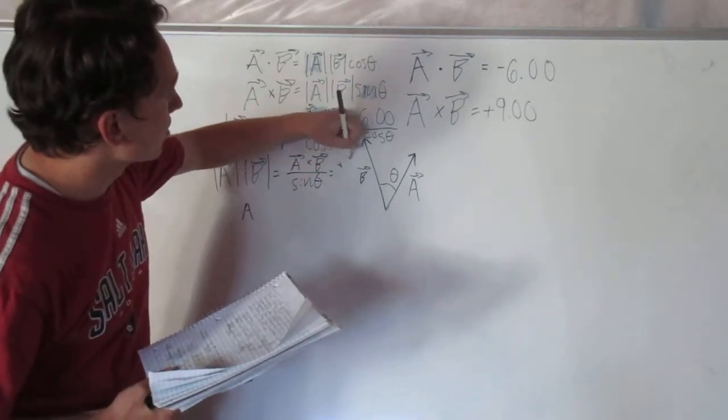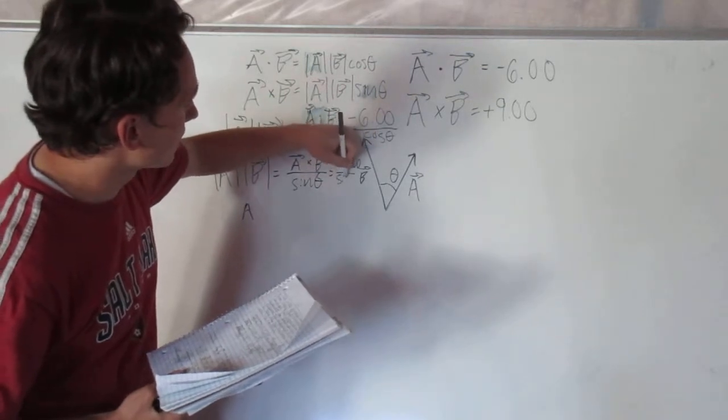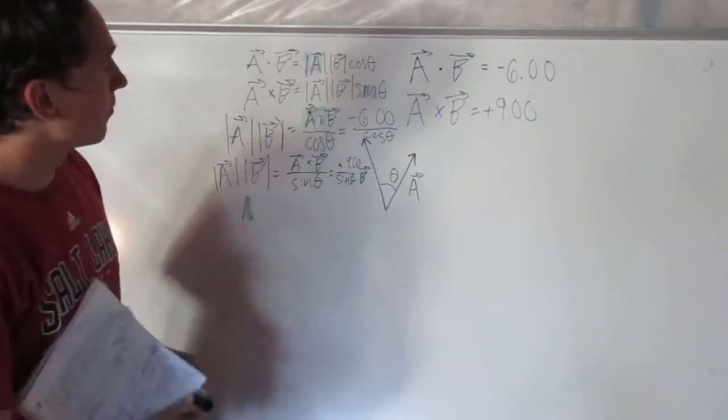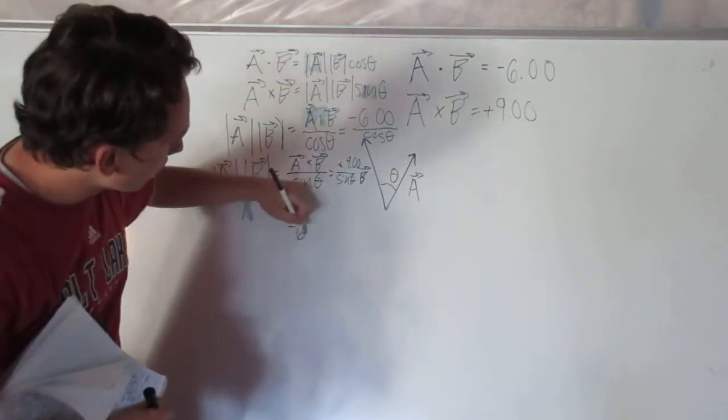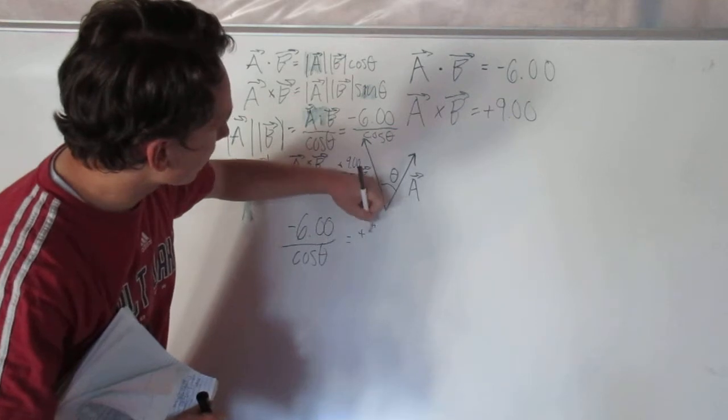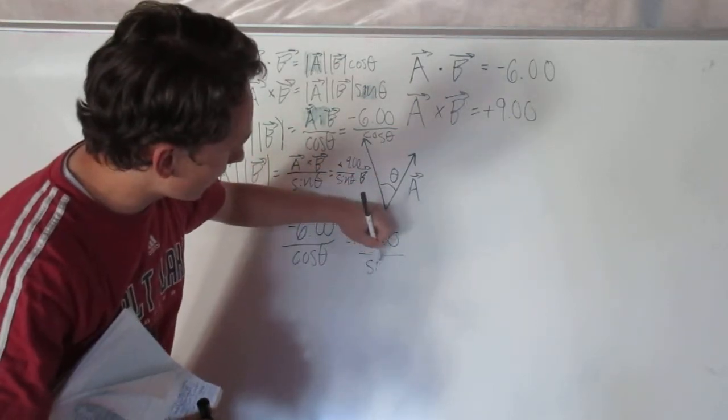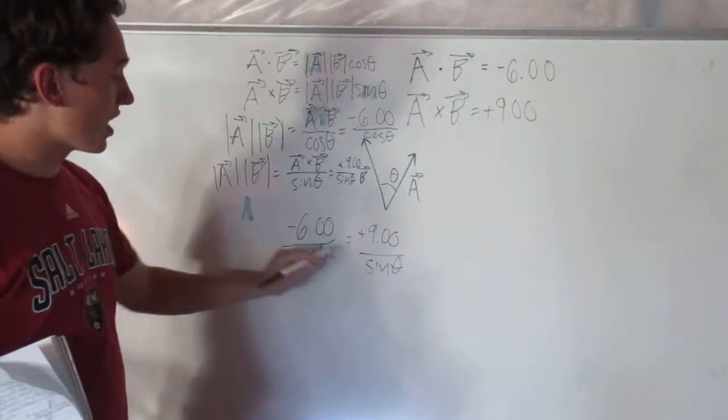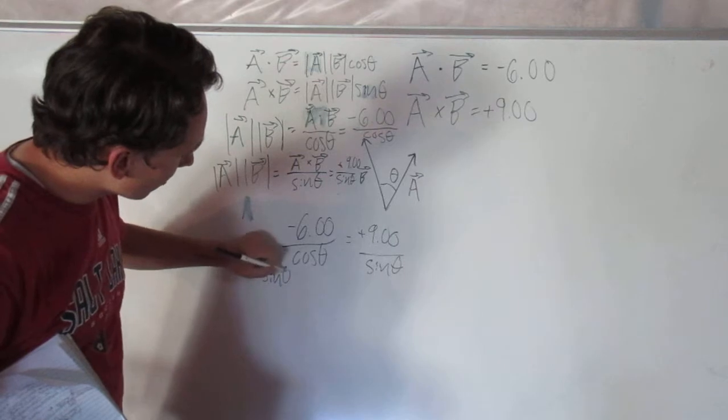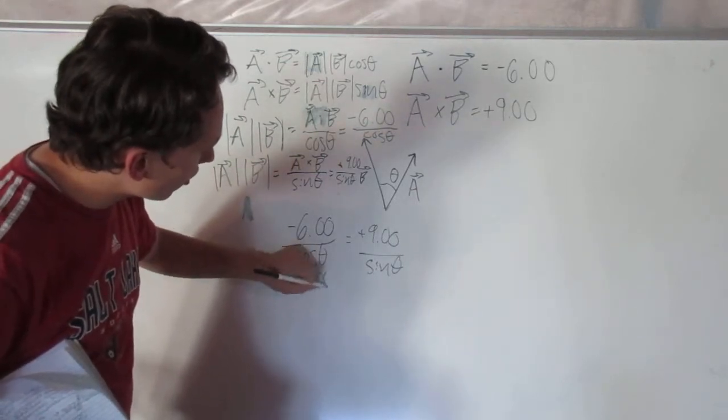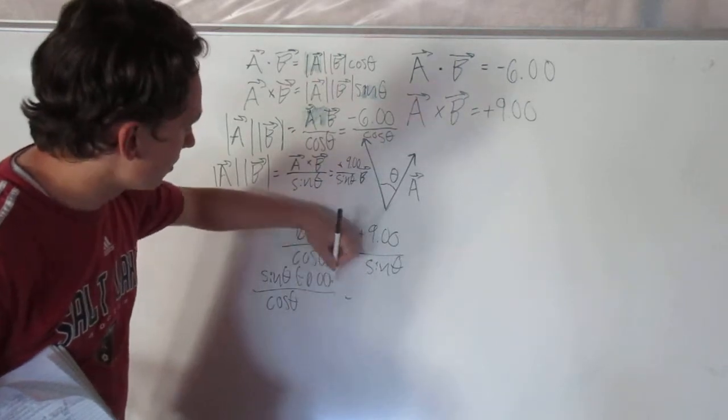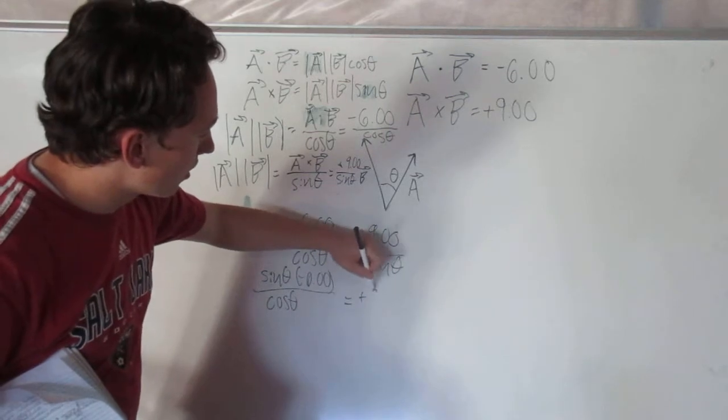So I get negative 6.00 over cosine of theta equals positive 9.00 over sine of theta. Now I'm going to multiply both sides by sine so it goes away. That cancels out, and I get sine of theta times negative 6.00 over cosine of theta equals 9.00.